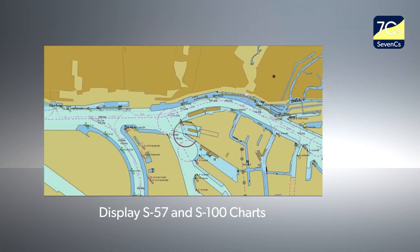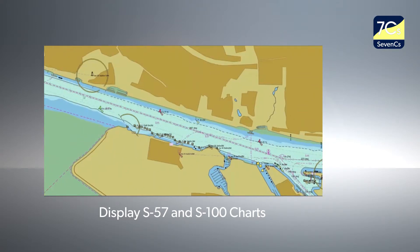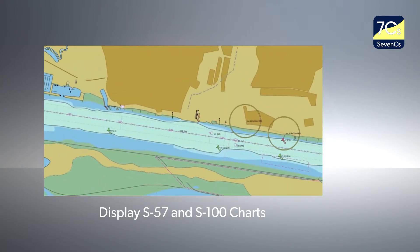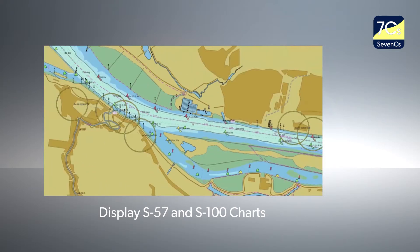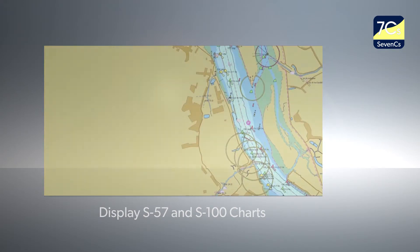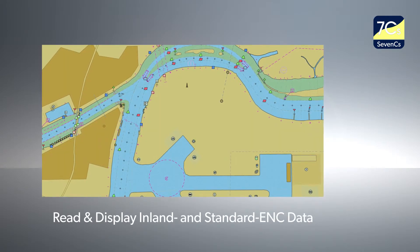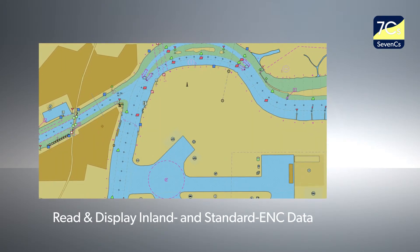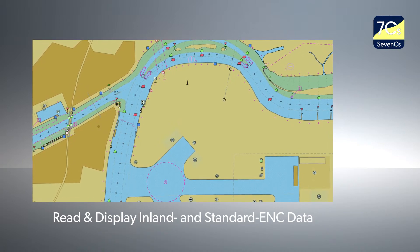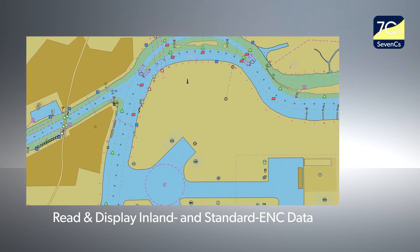A navigational application based on Nautilus is able to display S57 and S100 charts with improved rendering, simplified access to display categories, and high-performance draw functionality. Nautilus can read and display inland ENCs as well as standard ENC data, and we are currently increasing the number of supported chart formats, including military data.